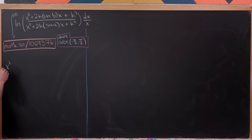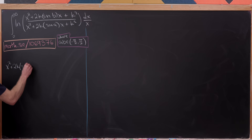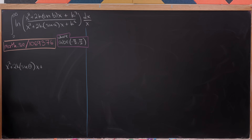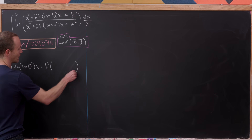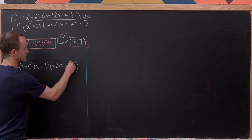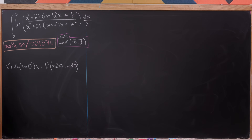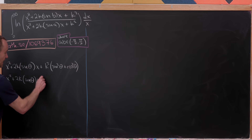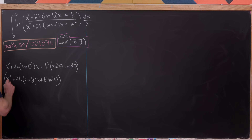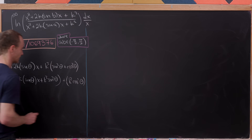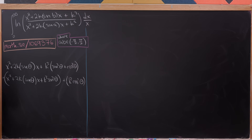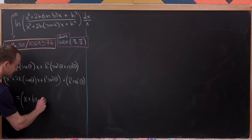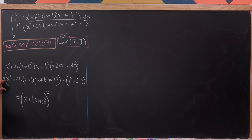Let's complete the square: x squared plus 2k times sine(θ) times x plus k squared. We multiply k squared by 1 in the form of sin²θ + cos²θ. Grouping gives us x squared plus 2k sinθ · x plus k² sin²θ, plus k² cos²θ. The first group is the binomial (x + k sinθ)² — yielding the x² term, the k² sin²θ term, and twice the cross term — plus k² cos²θ.